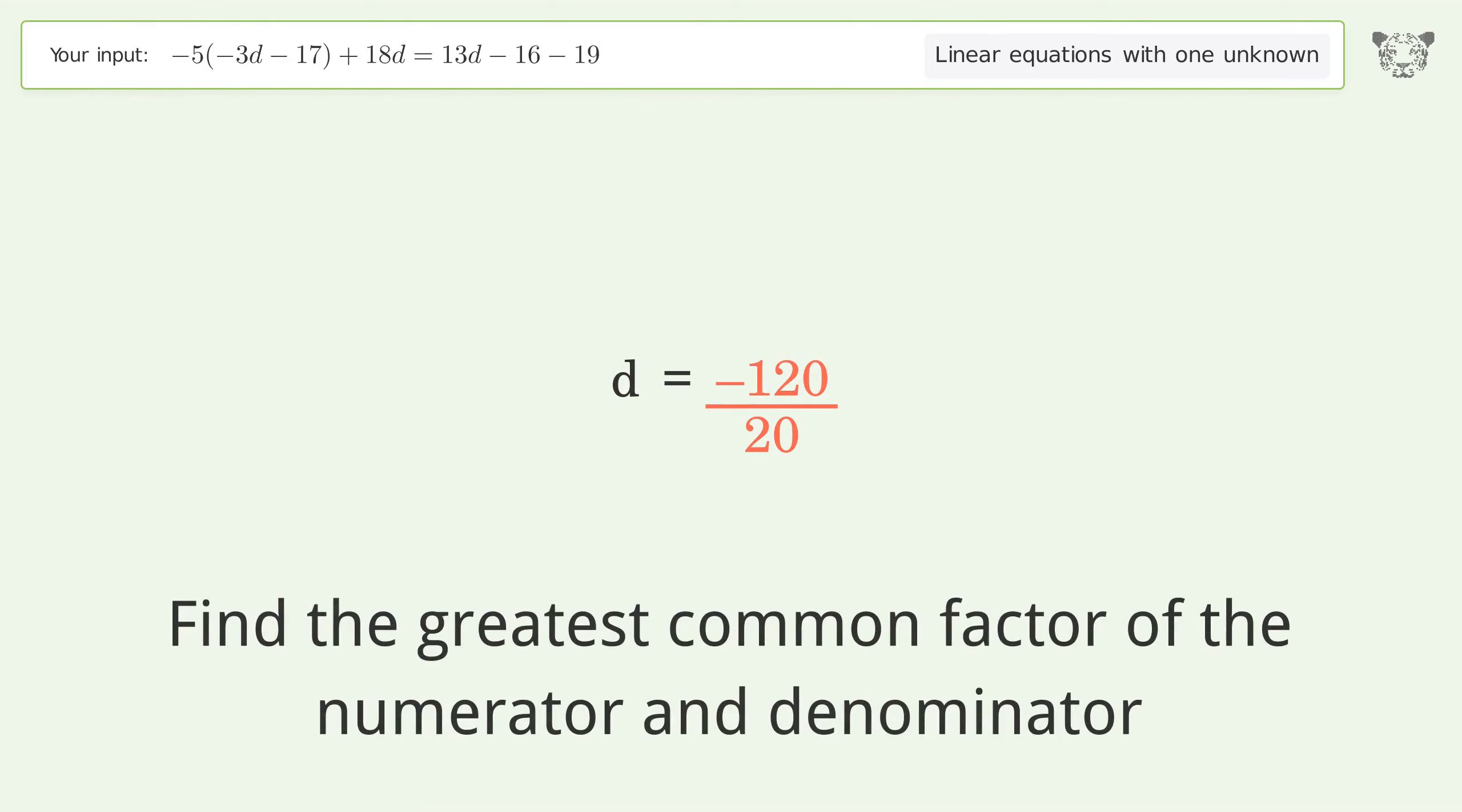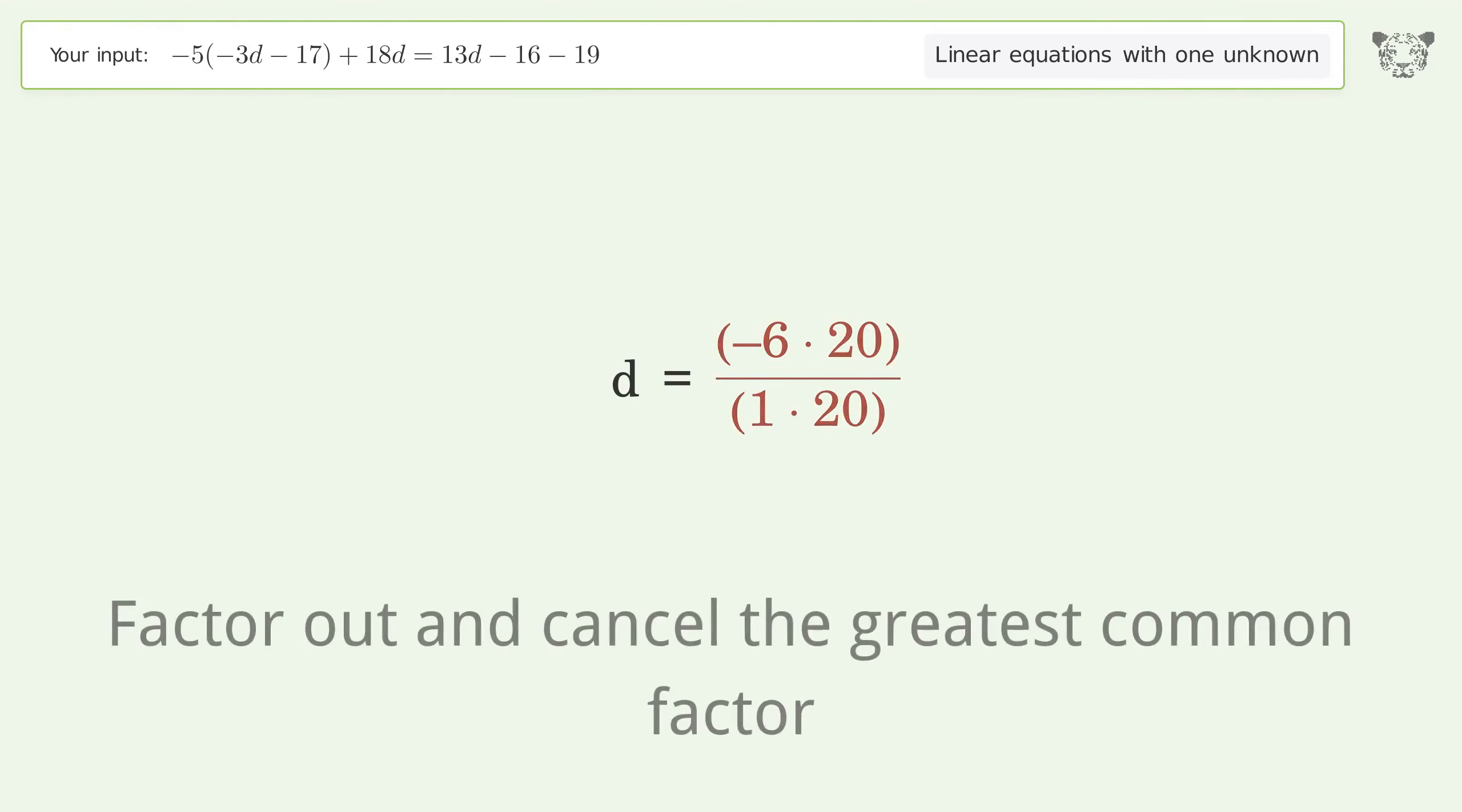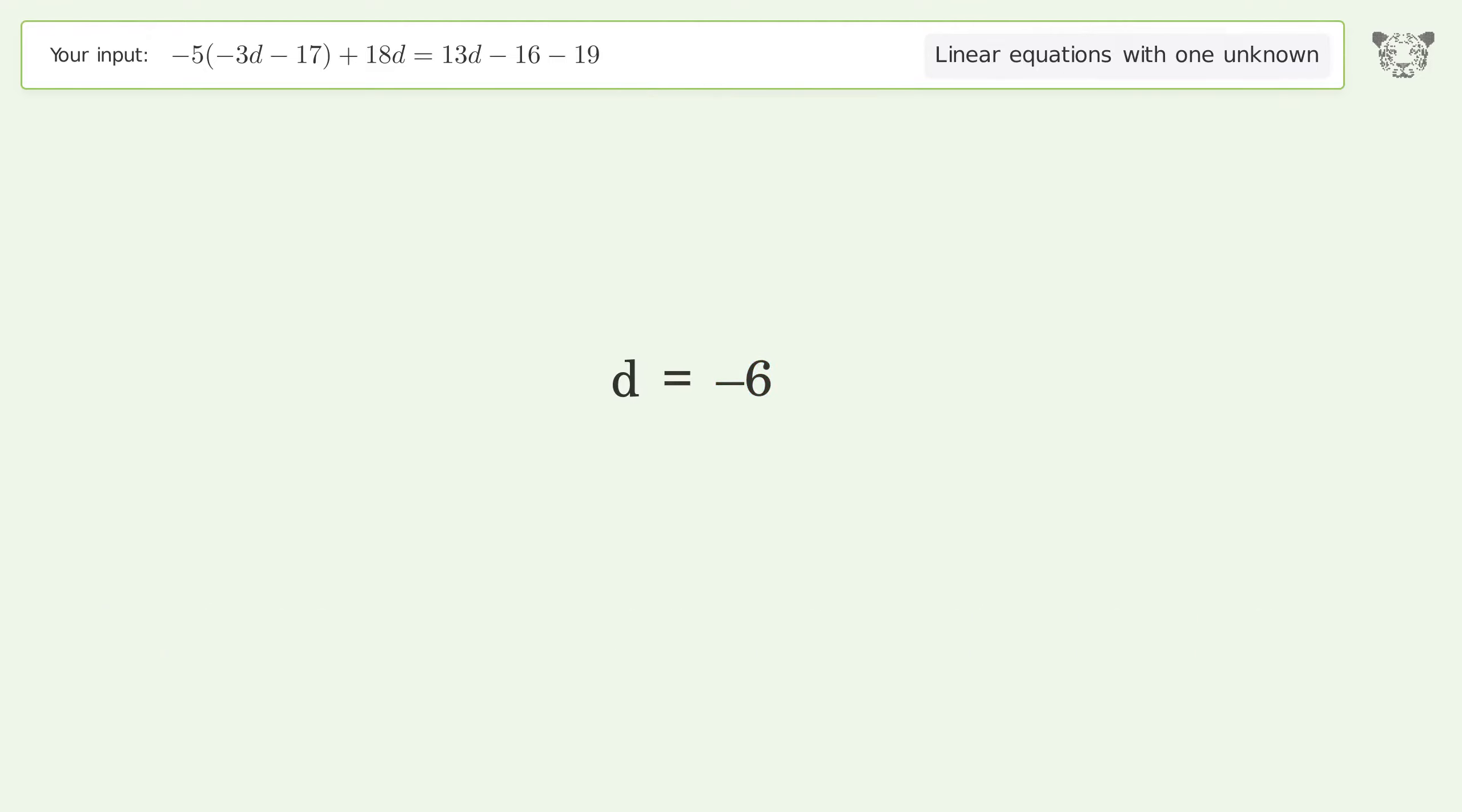Find the greatest common factor of the numerator and denominator. Factor out and cancel the greatest common factor. The final result is d equals negative 6.